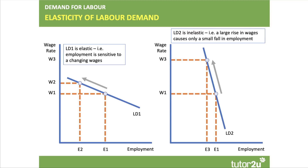For labour demand, you need to understand what might cause shifts in labour demand outwards or inwards. Crucially, you need to understand elasticity of labour demand and elasticity of labour supply. On the left diagram, labour demand is highly wage elastic — typically this is an occupation where wage costs are a big percentage of total costs and it's fairly easy to substitute capital for labour, such as security guards or digital businesses. It also depends on the ability of firms to pass on an increase in wage costs to the final consumer. On the right-hand side is a fairly inelastic demand curve, where a big increase in wages only causes a small fall in employment.